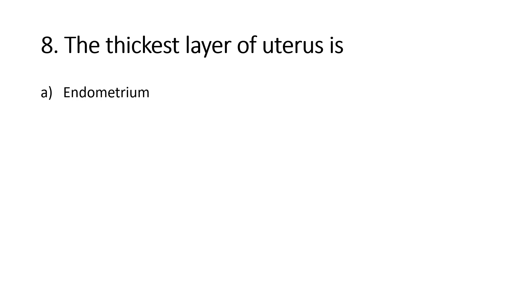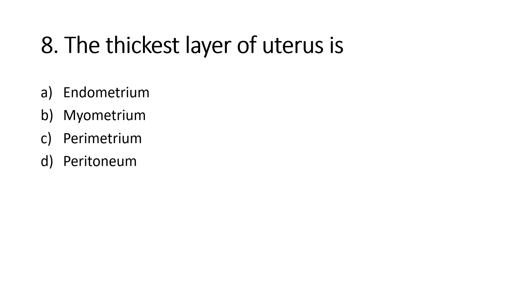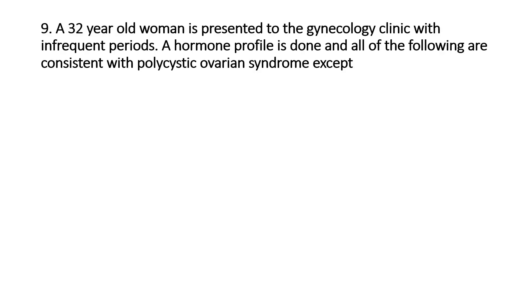The thickest layer of uterus is: Option A, Endometrium; Option B, Myometrium; Option C, Perimetrium; Option D, Peritoneum. Right answer is Option B, Myometrium. The uterus has 3 layers: perimetrium, myometrium, and endometrium. The middle layer, myometrium, made of smooth muscles, is the thickest layer.